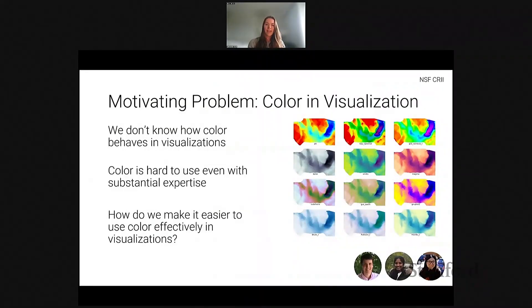Two of the biggest things that make color encodings hard are that we don't have good models for mapping color differences to data differences. And even with the models we do have, using color well currently requires substantial design expertise. In collaboration with my students, as well as folks at Tableau, IUPUI, and LANL, what I've looked to do is figure out how can we better model and understand what it means to use color well in order to drive algorithmic solutions that help people use color more effectively.